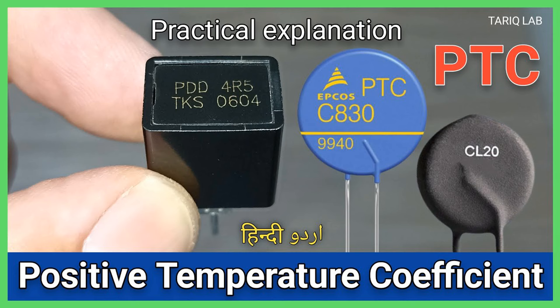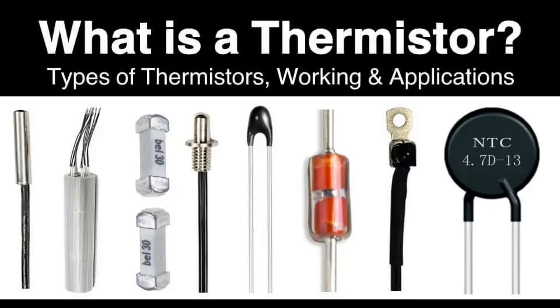Applications of NTC thermistors include temperature sensing: they are commonly used in temperature measurement and control systems, with examples including digital thermometers, thermostats, and environmental monitoring equipment. They are also used for temperature compensation in electronic circuits to adjust for temperature-induced changes, helping maintain accurate performance — for example, they can stabilize the frequency of oscillators and clocks.